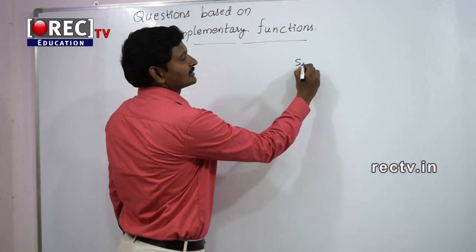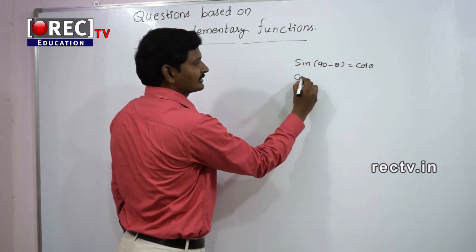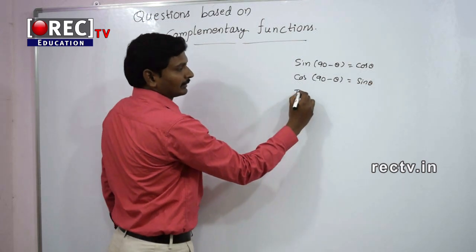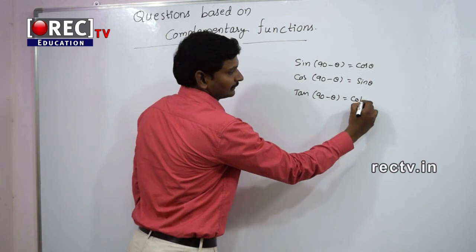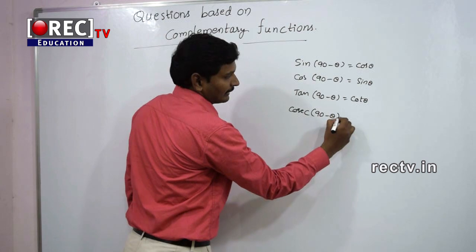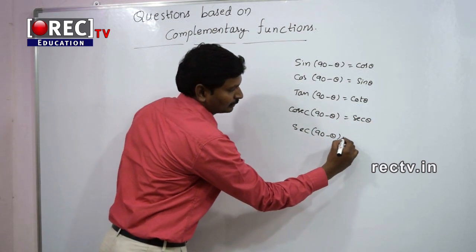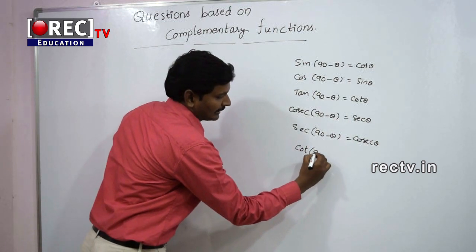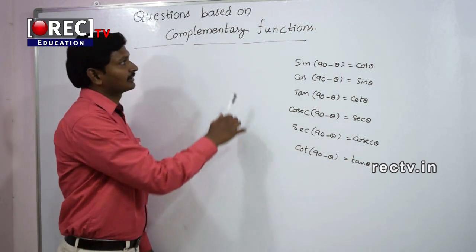We know that sin(90° - θ) = cos θ, cos(90° - θ) = sin θ, tan(90° - θ) = cot θ, cosec(90° - θ) = sec θ, sec(90° - θ) = cosec θ, and cot(90° - θ) = tan θ. These are the formulas based on this concept.